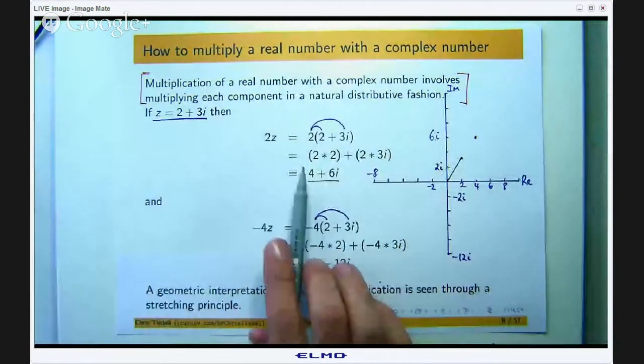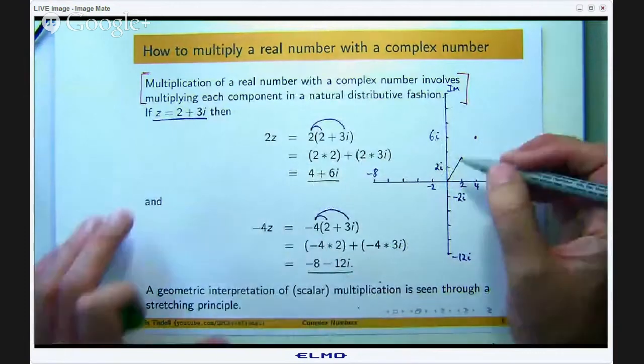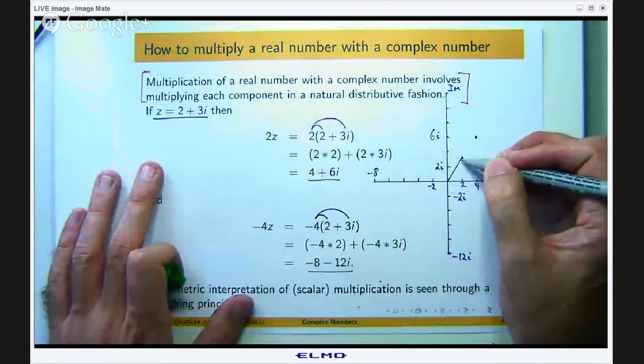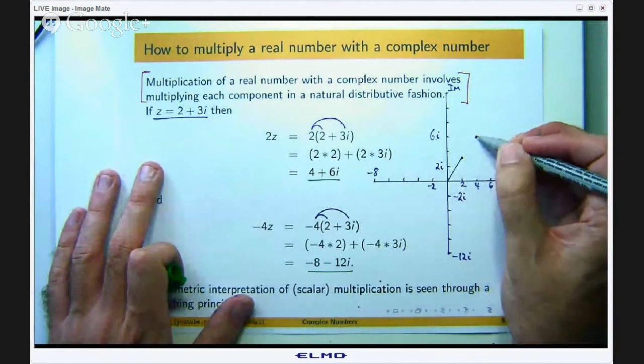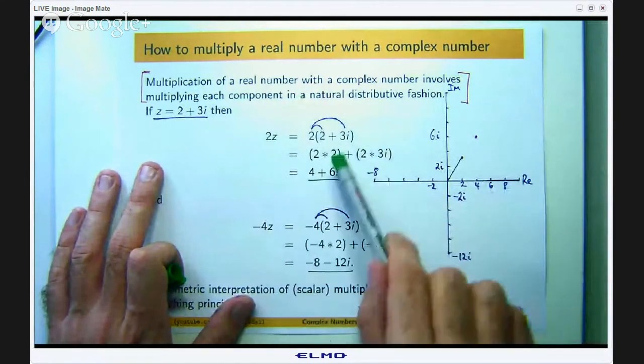Now I have multiplied this z by 2. Now you can see if I extend that line segment by a factor of 2, if I double it, I will go out to the point that represents 2z.